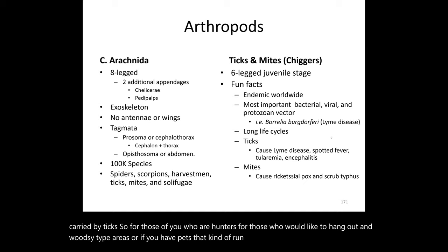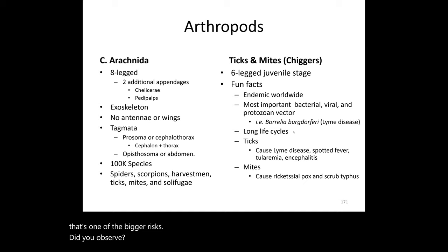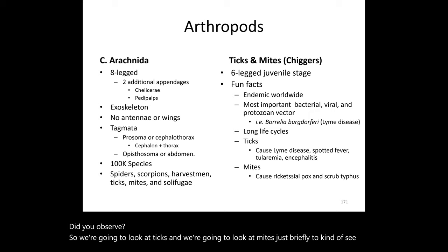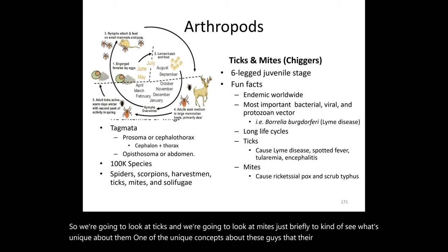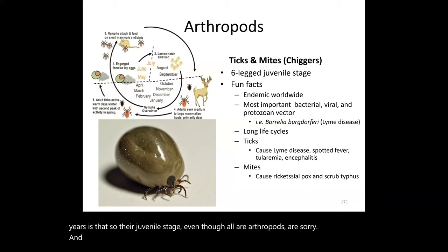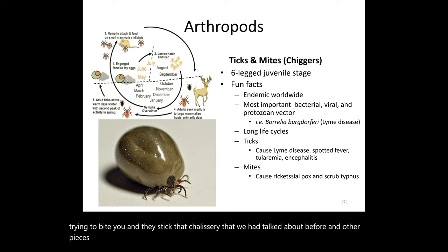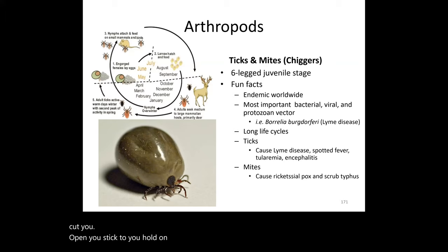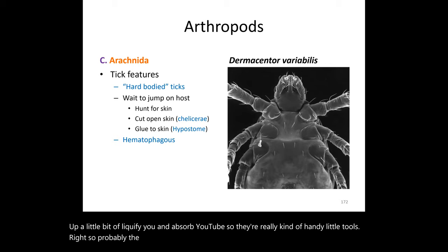Lyme disease is a significant risk for hunters, people who spend time in wooded areas, and pet owners whose animals roam in backyards. One unique characteristic of ticks and mites is that their juvenile stage has only six legs, even though adult arachnids have eight. They feed through blood meals, inserting their chelicerae and other body parts called opisthosomas to cut, attach, liquefy, and absorb blood from a host.